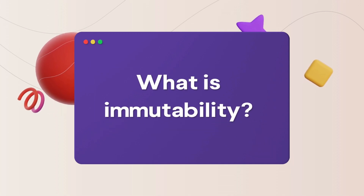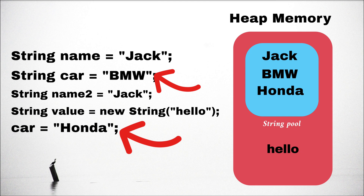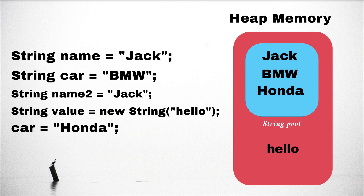Secondly, string immutability: when we change any string value inside Java code, the string pool doesn't update that value. Instead it inserts a new value. This means once a string is created, we cannot update, modify, or delete it — we have to create a new value inside the string pool. The previous value waits for the garbage collector. Until then, it stays inside the string pool and anyone can access that value if they have the memory dump.